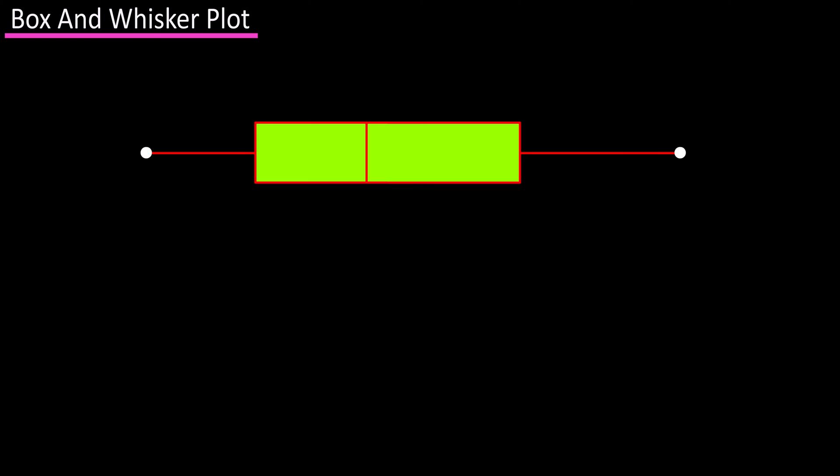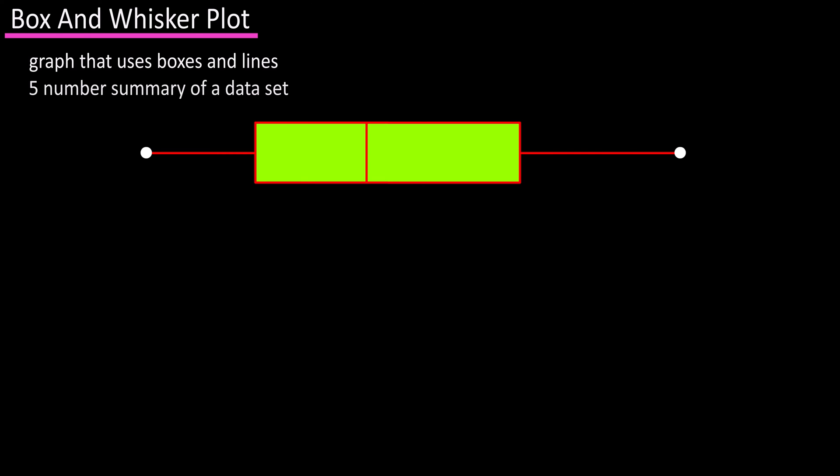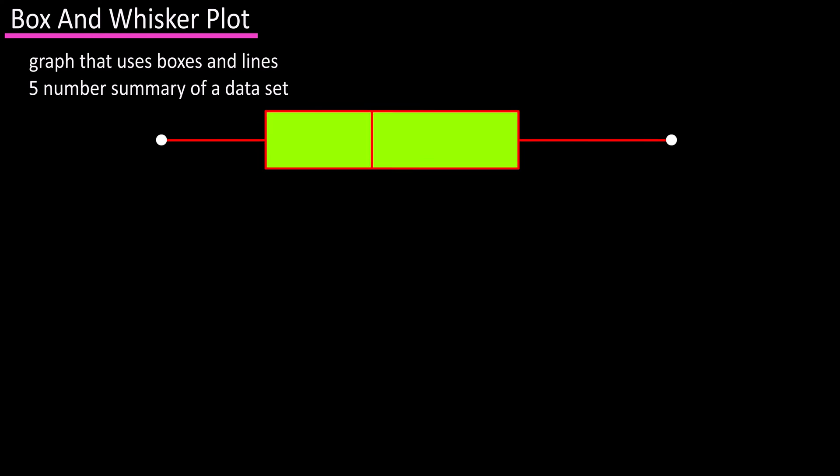A box and whisker plot is a graph of a data set that uses boxes and lines to visually display the data. It is basically a five-number summary of the data.